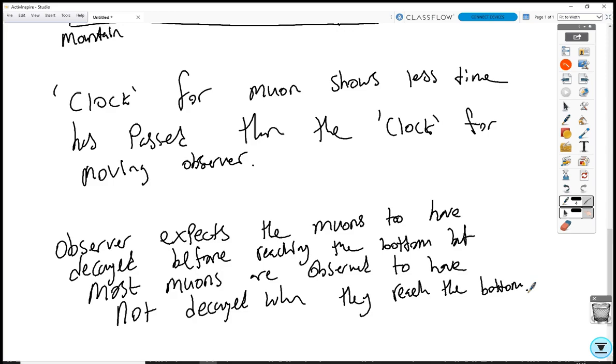Second is time dilation. The time at which the muons have observed themselves to have moved is different to the time that we observed them to have moved. The muons observe themselves as moving less time. We observe them as moving for a longer time. And so the times that we measure in the muons frame of reference versus our own frame of reference are different. And that's why we end up seeing them not have decayed by the time they reach the bottom when they should have done. And that's the start of special relativity.